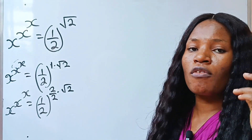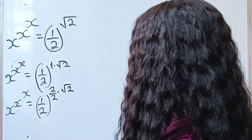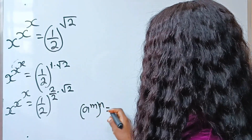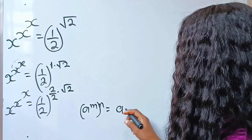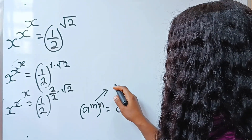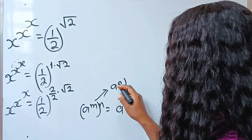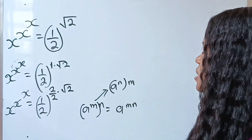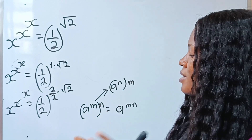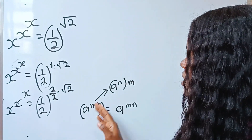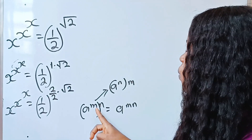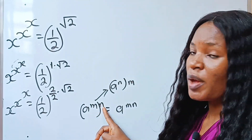I want us to recall this law of exponents. This law of exponents says that a to the power of m raised to the power of n is equal to a to the power of m multiplied by n. Also, you can rewrite this as a to the power of n raised to the power of m. It simply means that when you have two powers on a base, you can manipulate it anyhow you want, as long as you don't change the value — you multiply this by this.